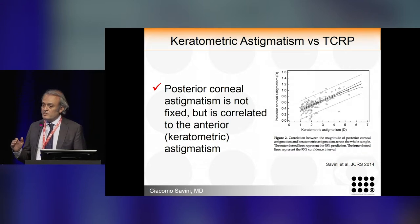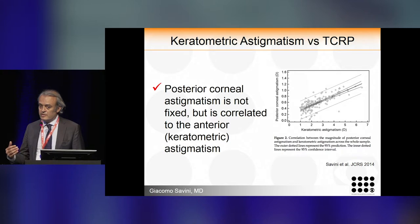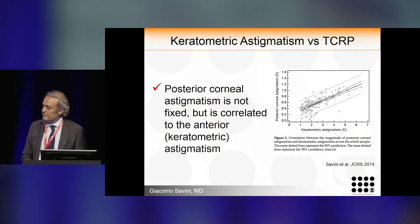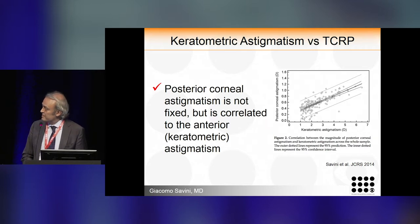Posterior corneal astigmatism changes according to the magnitude of the anterior corneal astigmatism, as you can see from this graph. Of course, if the anterior surface has a low astigmatism, you also have a low astigmatism on the posterior surface.